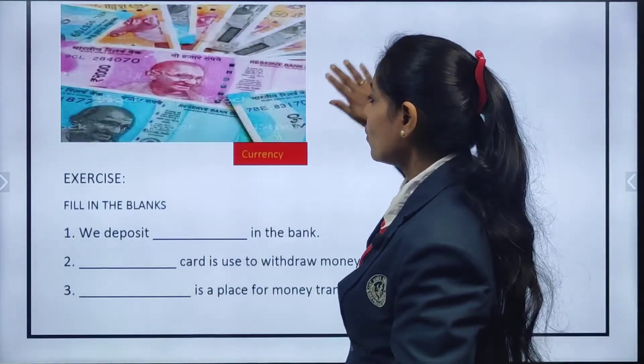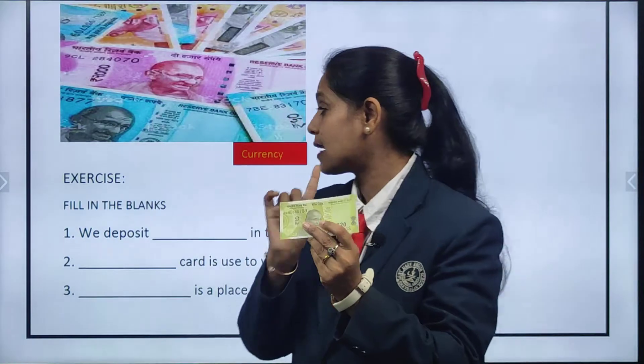Now, what is this? Yes, this is a note — we call it currency. So what is this? This is currency. This is a currency note and we have it in different amounts: 20 rupees, 10, 100, 2000, 500 — right? So different currency notes are there. What is this? We call it currency.